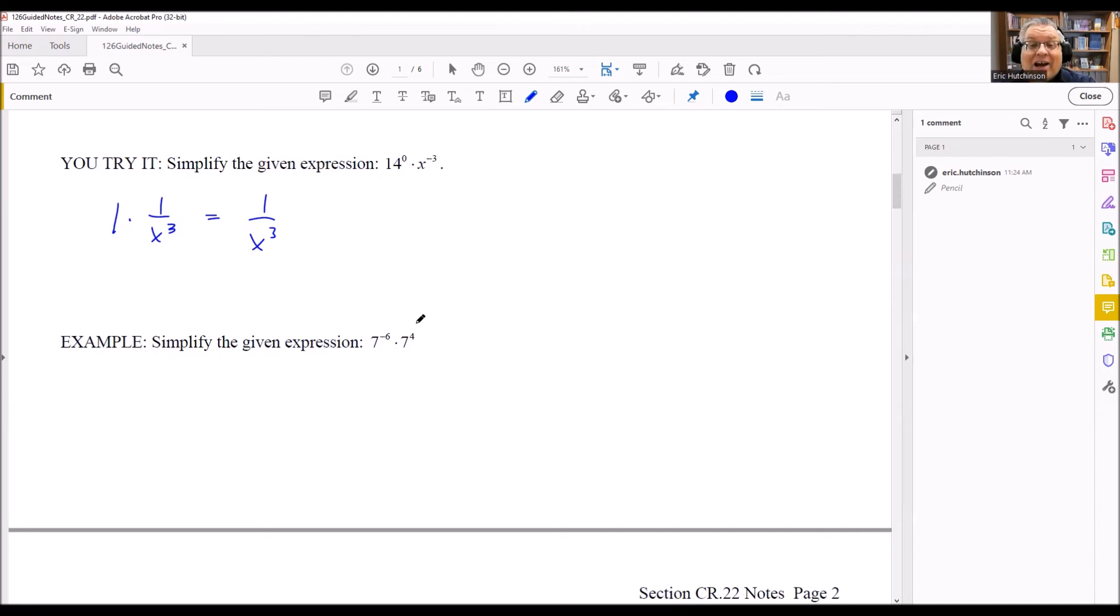For this last one, we're going to add the exponents because we can use the product rule for exponents. Multiplying two things with the same base, you add the exponents. We have negative 6 plus 4, giving us 7 to negative 2. But then we want to write this as a positive exponent: 1 over 7 squared, which equals 1 over 49. That's what we would leave as our answer after we evaluate it.